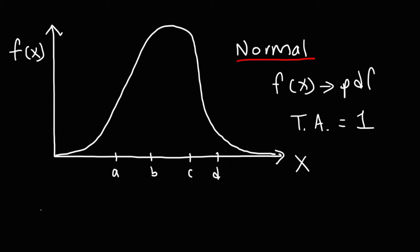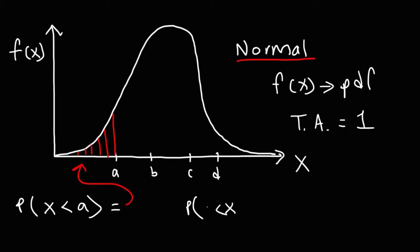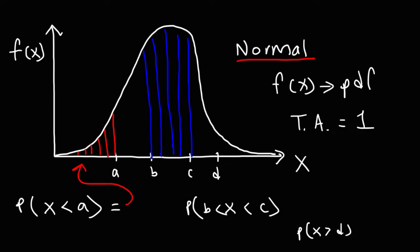If we wish to calculate the probability that x is less than A, we calculate the area under the curve to the left of A — that's the area shaded in red. Likewise, if we wish to calculate the probability that x is between B and C, we determine the area under the curve between B and C. And if we wish to calculate the probability that x is greater than D, we calculate the area under the curve to the right of D. The probability is always equal to the area under the curve for a continuous probability distribution.